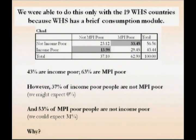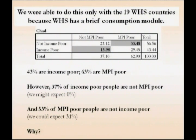Unfortunately, we do not have for most countries data from the same survey, and we are not sure of the quality of the World Health Survey data. But presenting one example from Chad: the income poverty rate was 43% and the MPI 63%. We might expect all of the 43% who are income poor to also be MPI poor, with 20 extra percent being additionally MPI poor. Instead, we find a disjunction where 37% of income poor people are not MPI poor, and discrepancies in the other direction as well. These raise questions for research and point to a need for investigating the complementarity and its policy relevance.